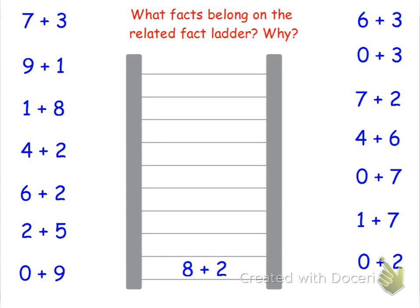Now, we talked about today in our lesson that we know that related means that they have something in common. So, what we have here is a related fact ladder. We start off with a fact that's down here, which is 8 plus 2. And we have these lovely little number sentences, these expressions on the side. And we're going to be writing some that are related to 8 plus 2.